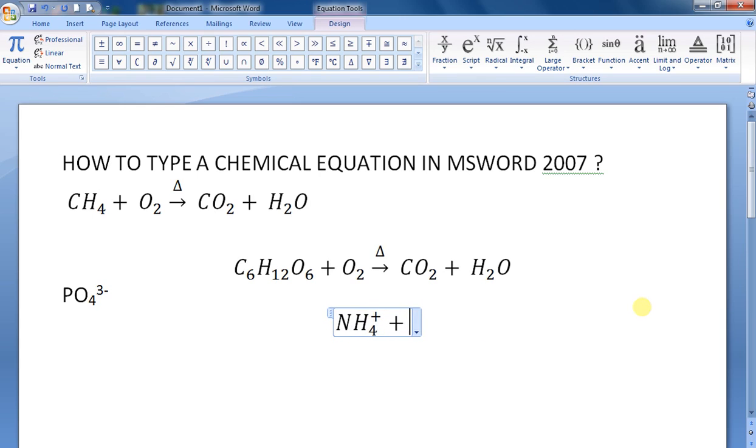Similarly for carbonate: CO underscore 3, then superscript 2-minus. I got messed up here. CO underscore 3, press space bar, then type 2-minus. I mean underscore 3, then caret minus 2.